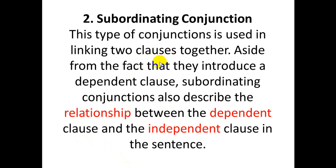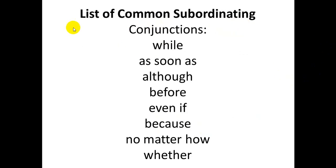We use a subordinating conjunction when one clause is dependent and one is independent, to show the relationship between them. Some subordinating conjunctions are: even, while, as soon as, although, before, even if, because, no matter how, whether.